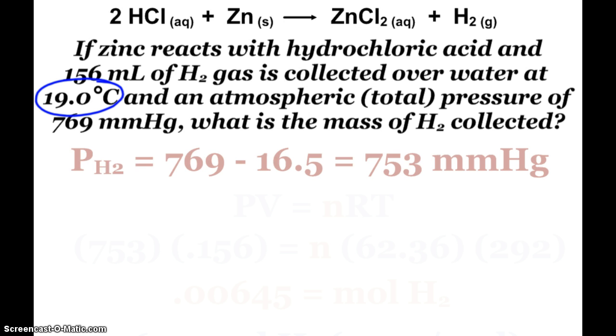So, I need to adjust the overall total pressure. So, 769 is what was recorded. I subtract out the 16.5 from that table, and then using sig figs, that gives me the pressure of 753 millimeters of mercury. And so, now, I can use that in an effort to figure out the mass of hydrogen collected.